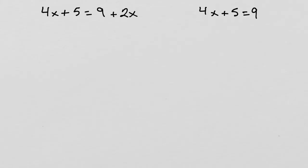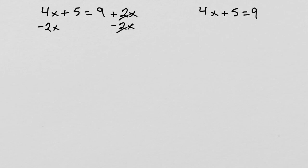You can choose to move the 4x or 2x. I'll move the 2x to the other side of the equation. To do that, since the 2x is adding, you will subtract 2x from both sides of the equation. The 2x will cancel out. Now, 4x minus 2x is 2x, so we have 2x plus 5 equals 9.